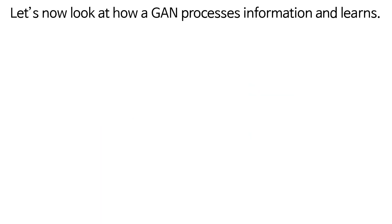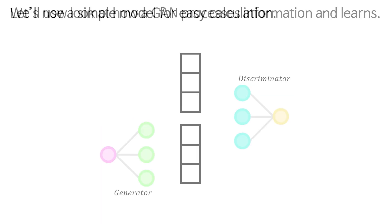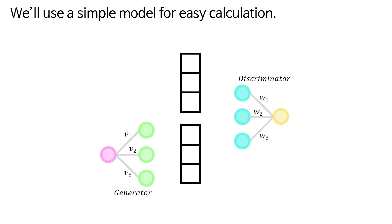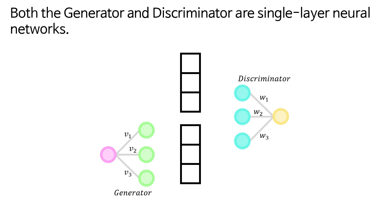Let's now look at how a GAN processes information and learns. We'll use a simple model for easy calculation. Both the generator and discriminator are single layer neural networks.